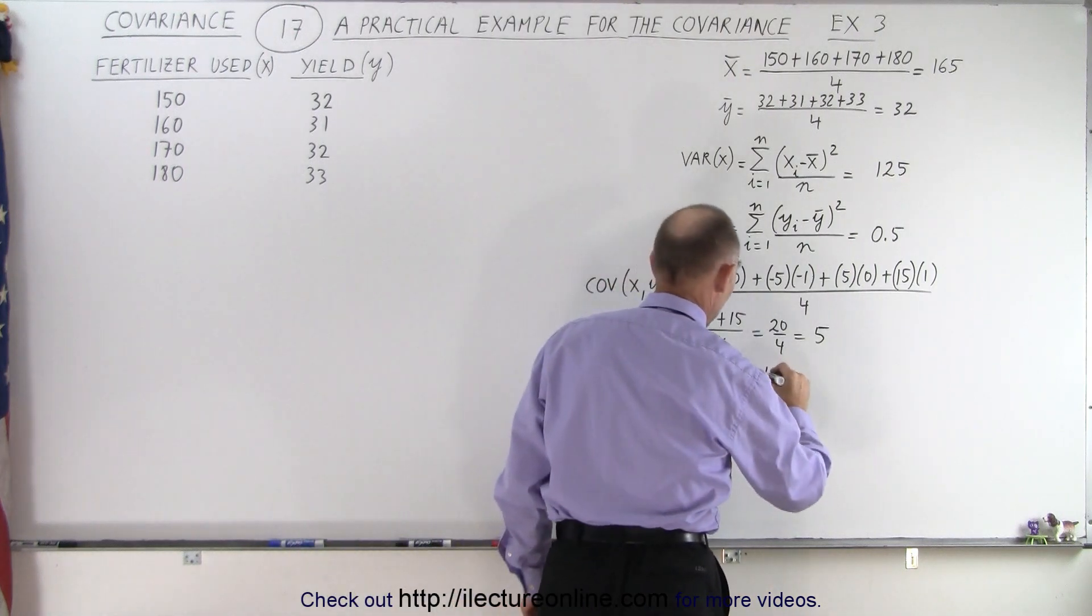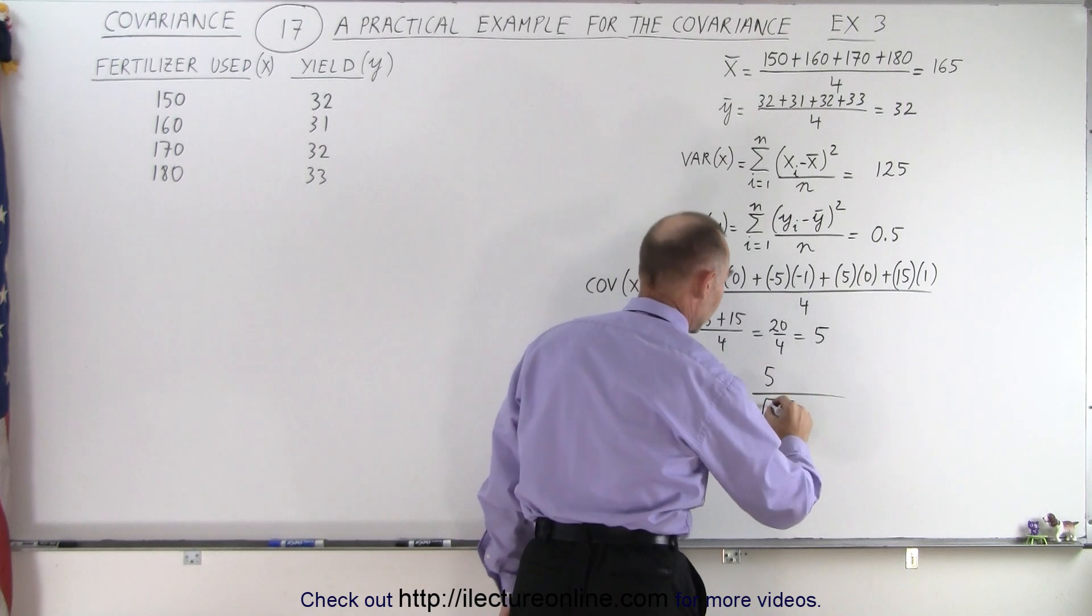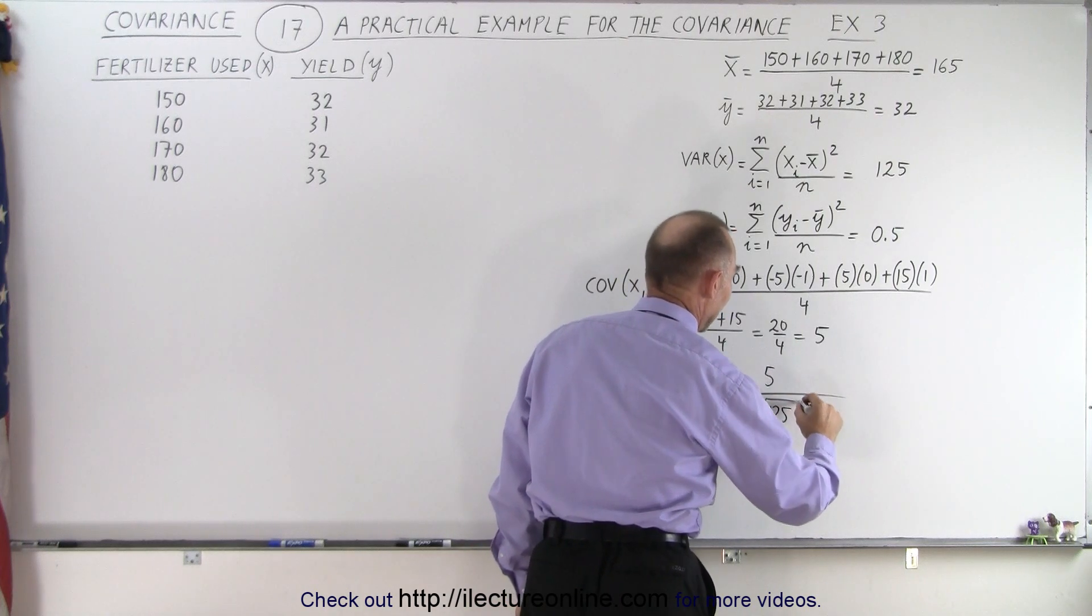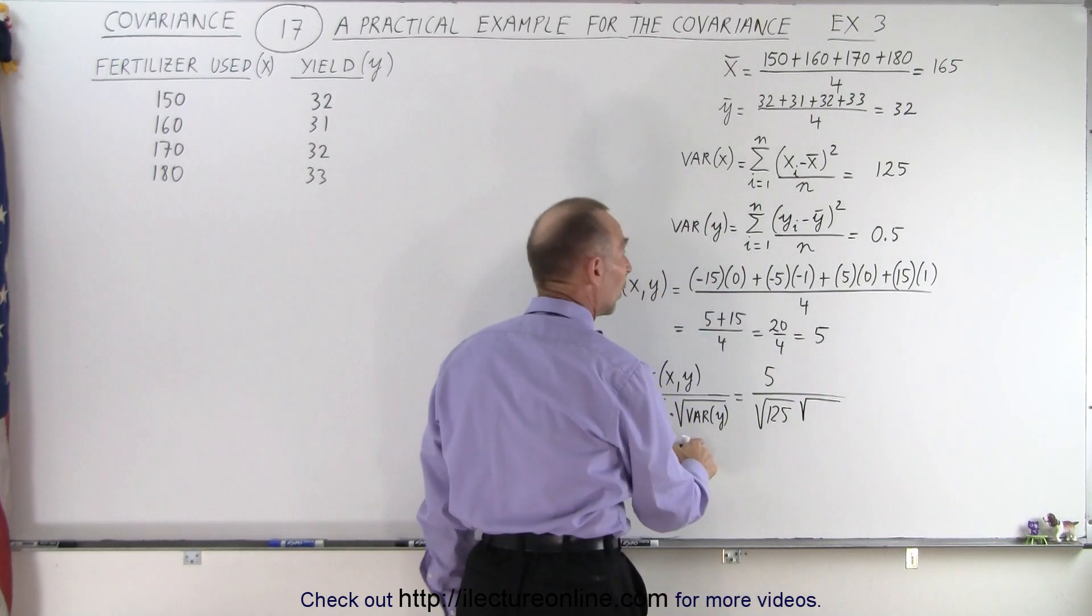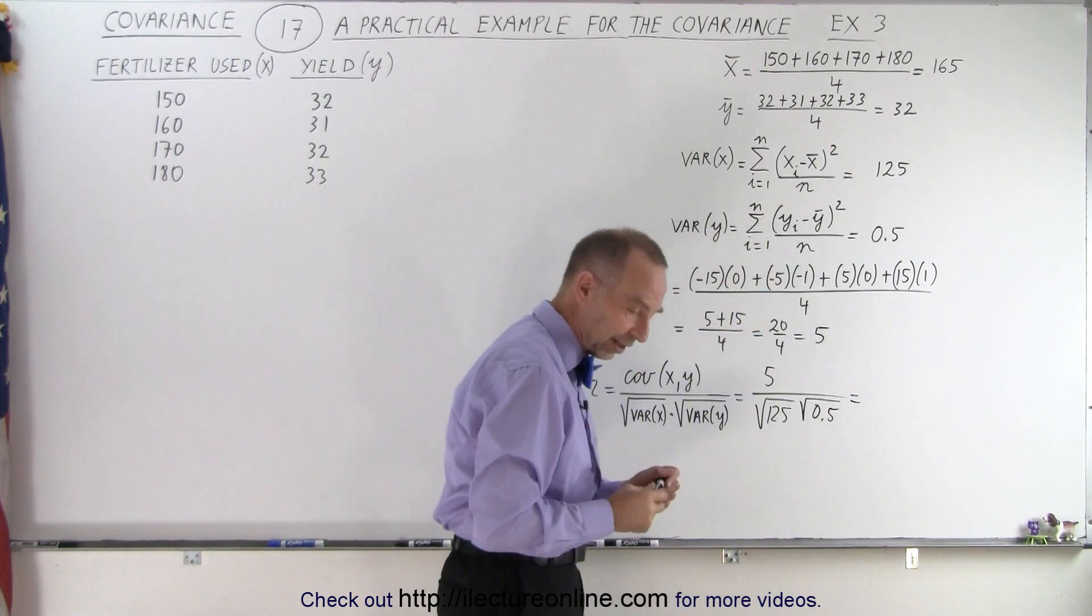So we take the covariance, which is five, and we divide it by the square root of the variance in X, which is the square root of 125, and the square root of the variance in Y in this case is 0.5. So let's see what that looks like.